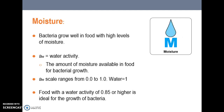Moisture is another thing bacteria need in order to grow. It generally needs a water activity of 0.85 or higher. The water activity scale, referred to as AW, ranges from 0 to 1, with pure water having a water activity level of 1. It measures the amount of moisture available in food to support bacterial growth.